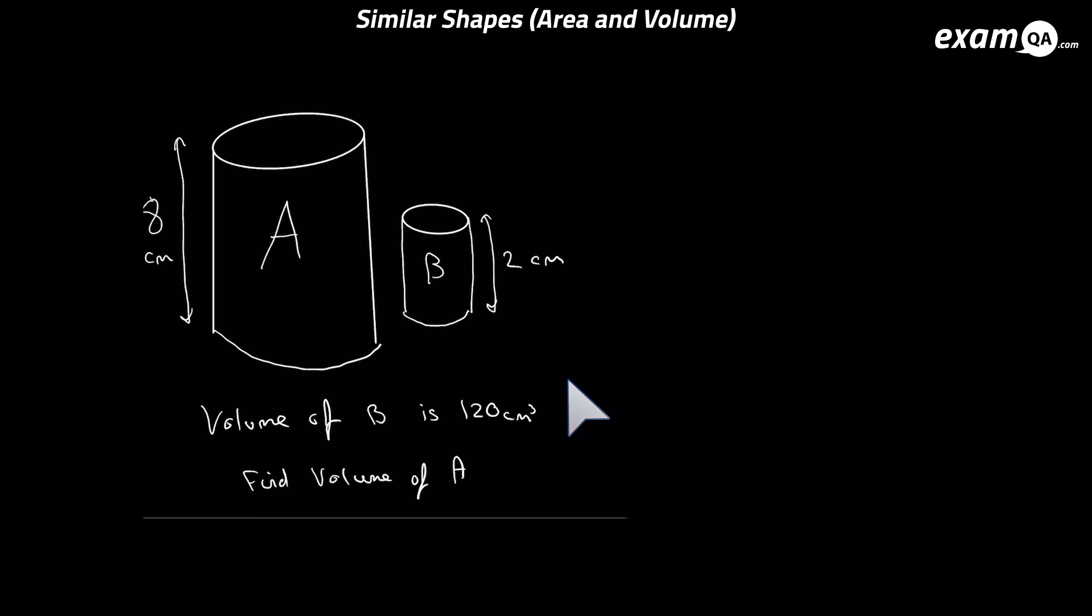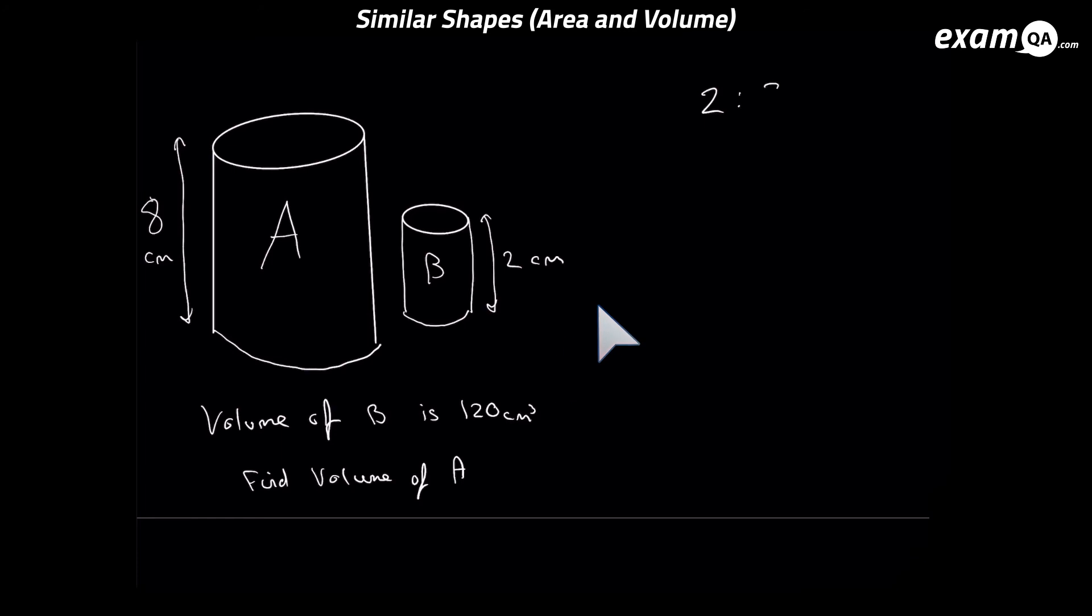Okay so here we've got a question where we need to find the volume. And we know two lengths of A and B, and we only know the volume of B which is 120. So since we know the lengths of both we've got the length ratio, and that's 2 to 8. Before you start working with this ratio you are allowed to cancel the ratio down. It does not change the ratio. It's just like a fraction. So this can be written as 1 to 4. And remember this is the length ratio.